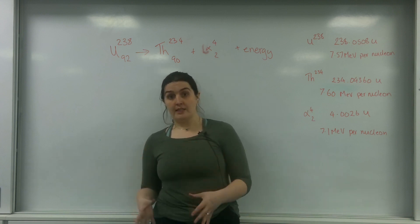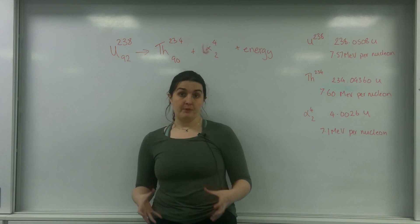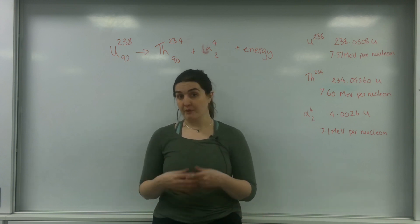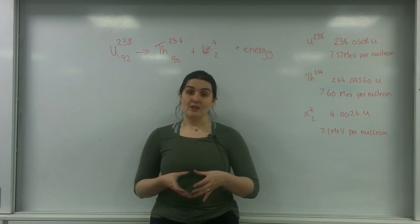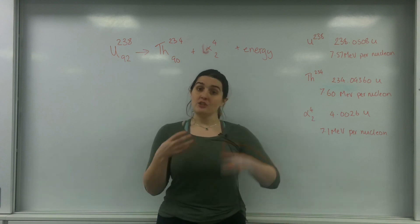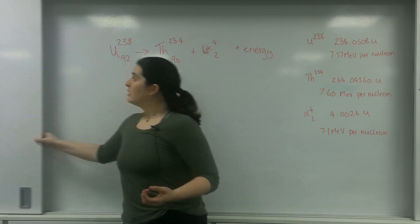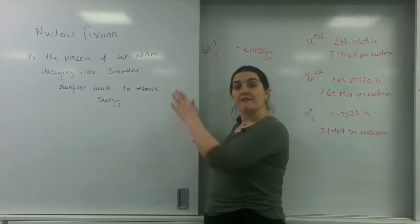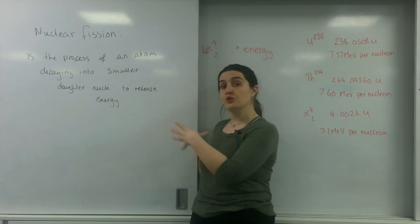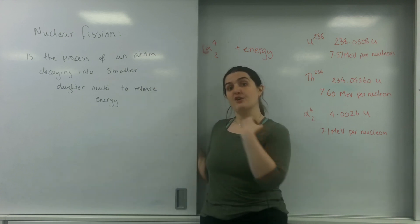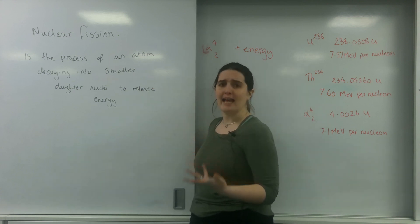Nuclear fission is the idea that an atom becomes unstable - you can do that by firing too many neutrons on it - and that atom decays into smaller atoms which in turn release energy. So nuclear fission is the process of an atom decaying into smaller daughter nuclei to release energy.